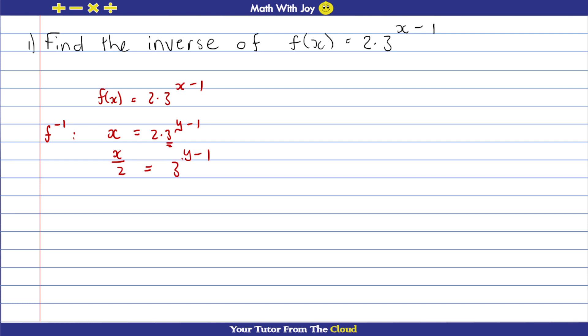Now I know that I can use log to bring down this exponent, which is going to be y. So y minus 1 equals log base 3, and then whatever is on the other side goes here: x over 2.